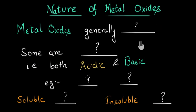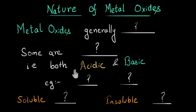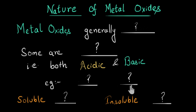Now let's summarize the video. We saw the nature of metal oxides and that some metal oxides are both acidic and basic in nature — what we call amphoteric. Can you give two examples of such oxides? We also saw that some metal oxides are soluble and some are insoluble in water. Try to remember at least one example of each.